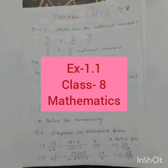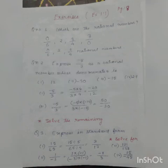Question number 1: Which are rational numbers? 0 by 6, 2, 3 by 4, and 3 by 0? Clearly, we know that 0 by 6, 2, and 3 by 4 are the rational numbers.